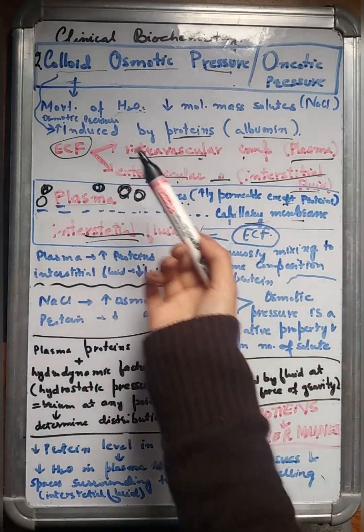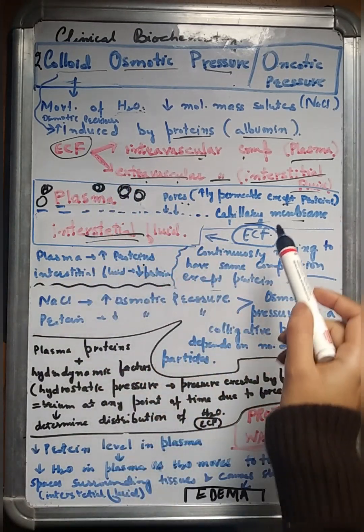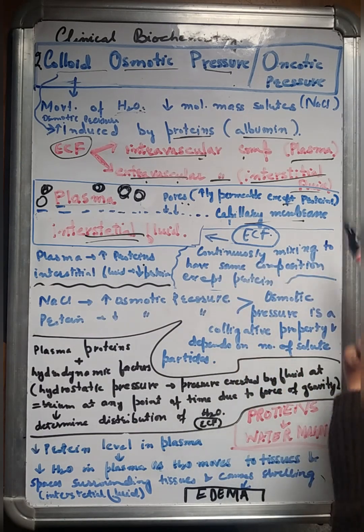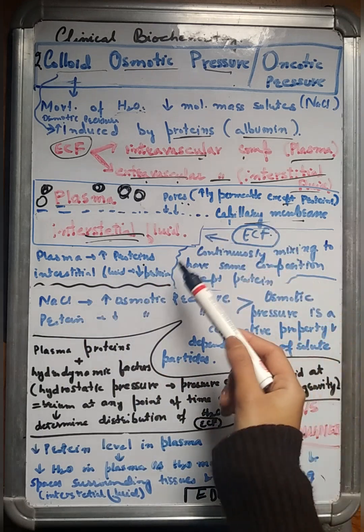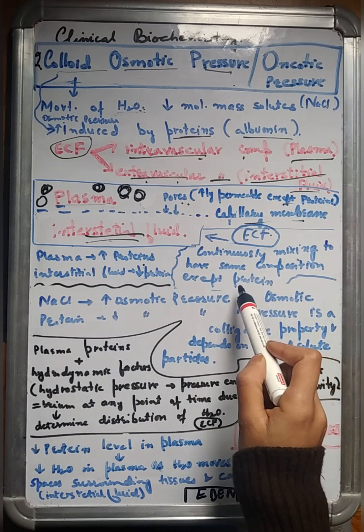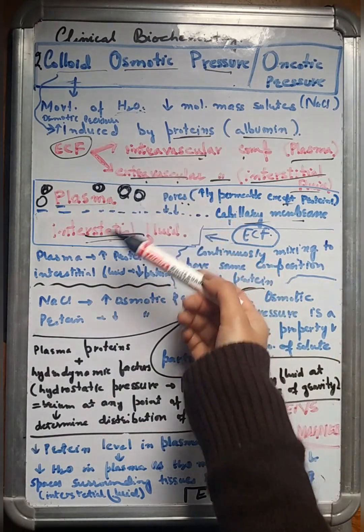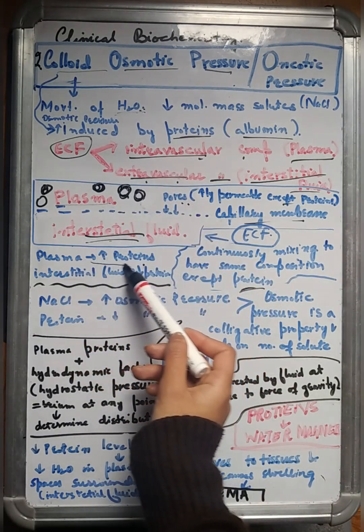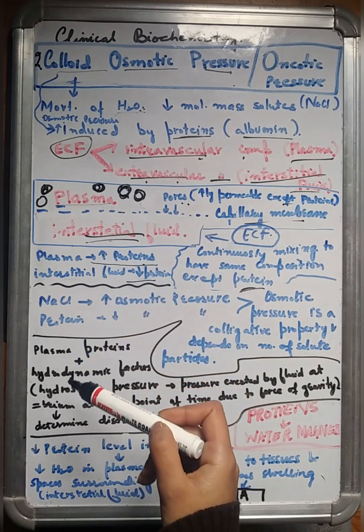These are the compartments of the ECF: plasma and the interstitial fluid. What happens in ECF is there is continuously mixing between the plasma and the interstitial fluid so that we have same composition. But there is one exception, that is the proteins, because proteins cannot pass through this capillary membrane towards the interstitial fluid. Hence, there is more concentration of proteins in the plasma in comparison to the interstitial fluid.